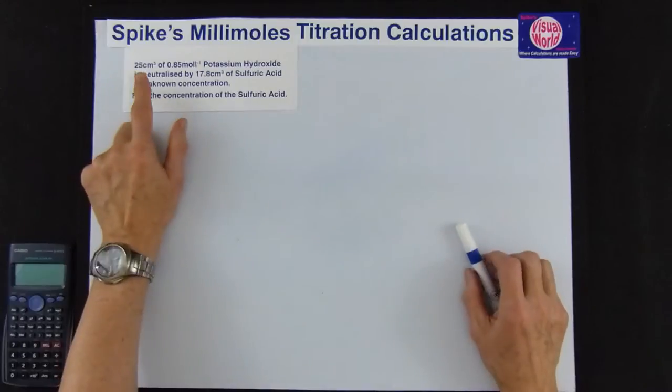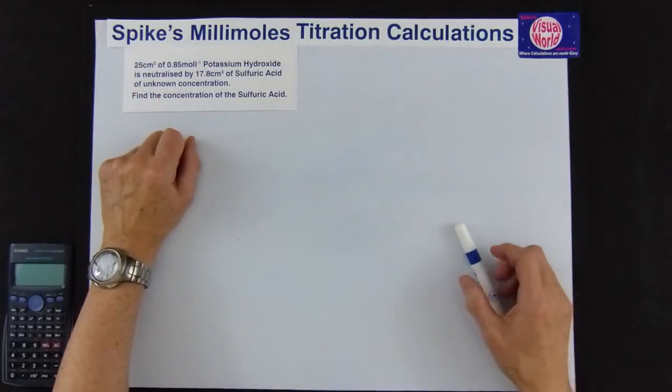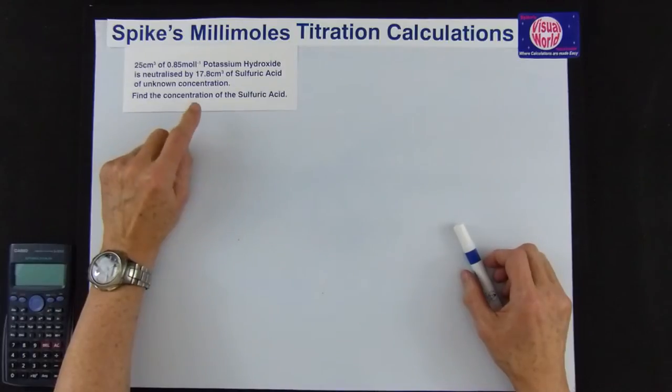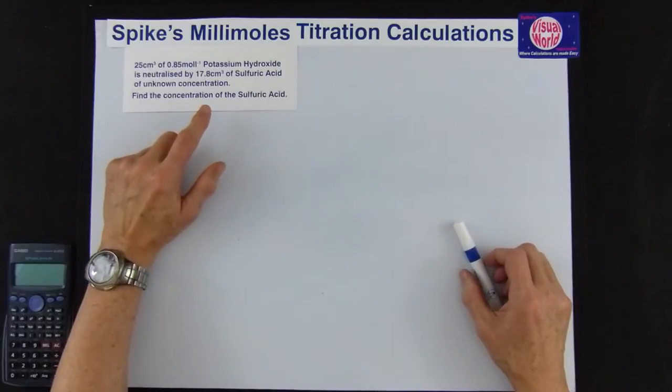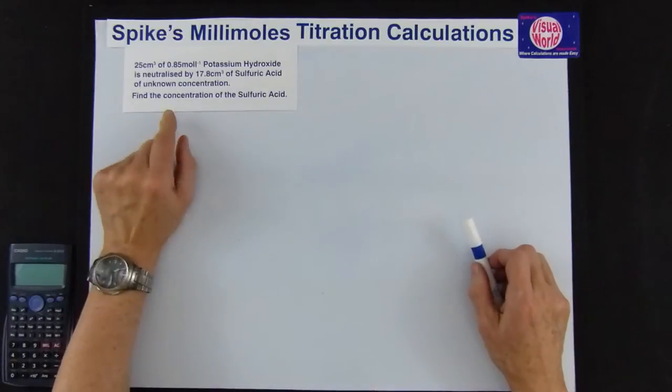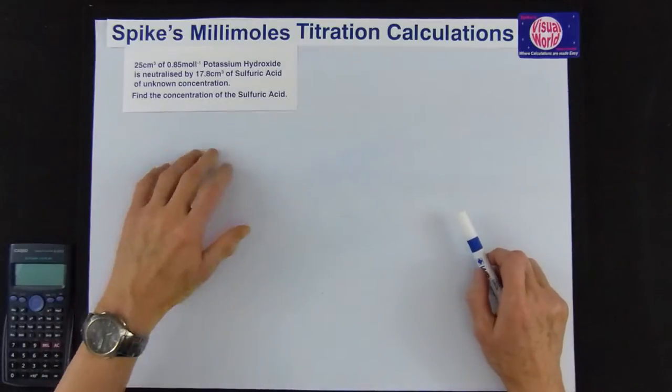I'm going to start with this question here: 25 cm³ of 0.85 moles per liter potassium hydroxide neutralized by 17.8 cm³ of sulfuric acid of unknown concentration. We've got to find the concentration of sulfuric acid.